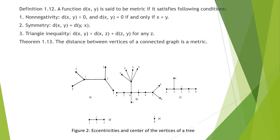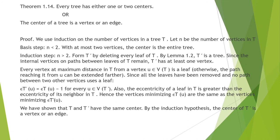We are given examples where the eccentricities and center of the vertices of a tree should be marked from the figure. Theorem: every tree has either one or two centers, that is, the center of a tree is a vertex or an edge. We prove this by induction on the number of vertices in a tree T. Let n be the number of vertices. For n less than or equal to 2, with at most two vertices, the center is the entire tree.